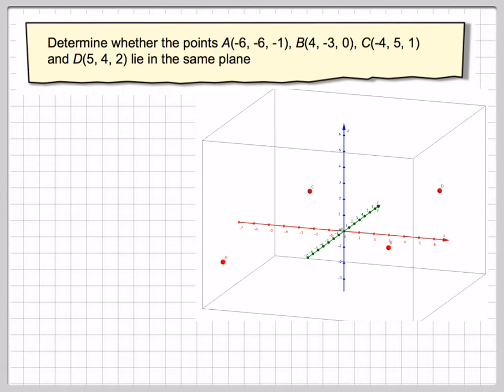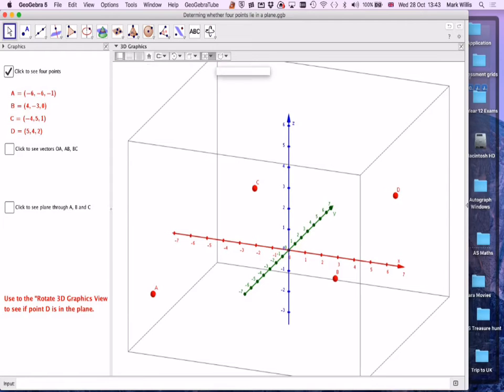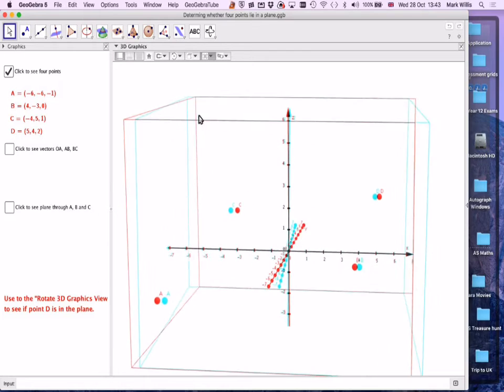If we look at this in GeoGebra for a minute, here I have the four points. If you've got some red-cyan glasses and put it in 3D mode, we can see these four points; they look like they lie in a plane.